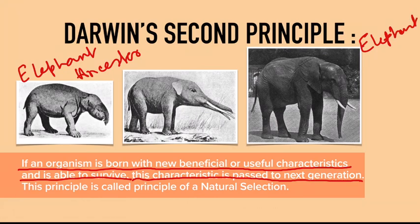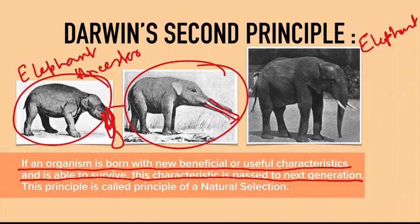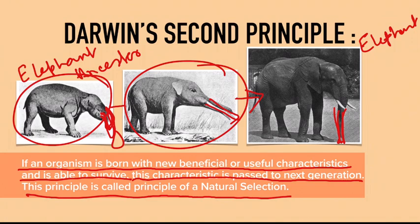The ancestor animal had a very small trunk. It was soon realized that having a longer trunk was very useful — it helped to move around things. So over time the trunk got longer and longer. As you can see in the middle, the trunk is much longer than the first animal, and the modern elephant has a very long trunk. This principle is also called the principle of natural selection.